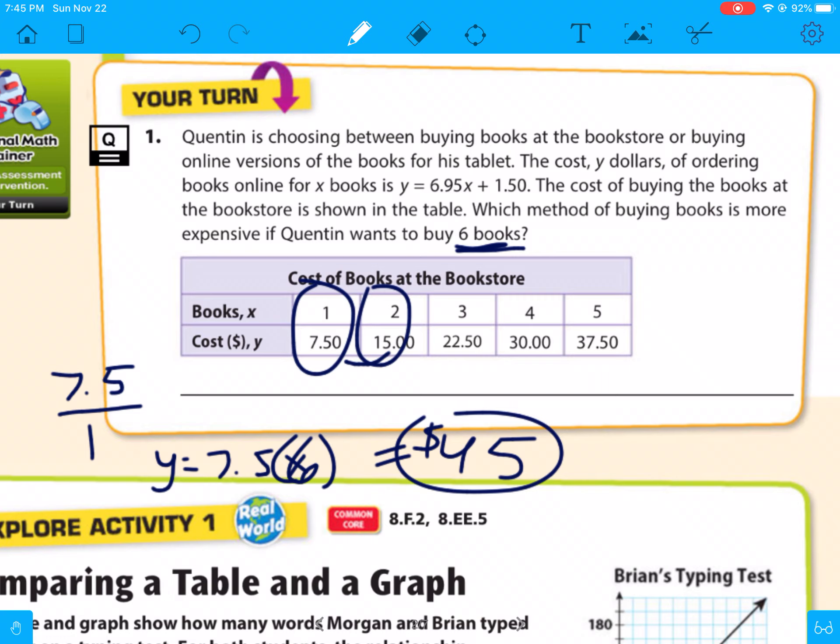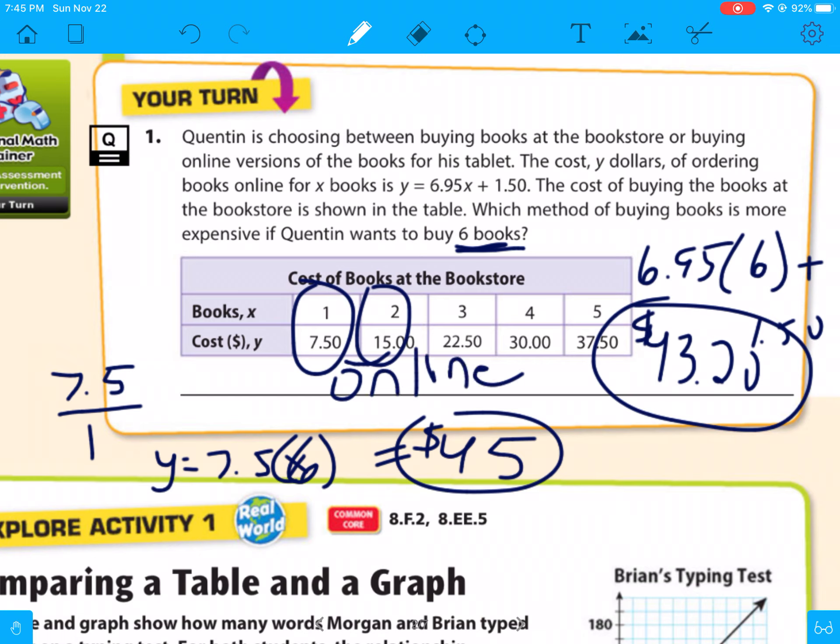And then the other one, it's going to be 6.95 times 6 plus $1.50. So 6.95 times 6 plus $1.50. So the ordering books online is going to be $43.20. So which one's cheaper? Online. So do you see all you're going to have to do is just put them both as equations and then plug in what you want to know.